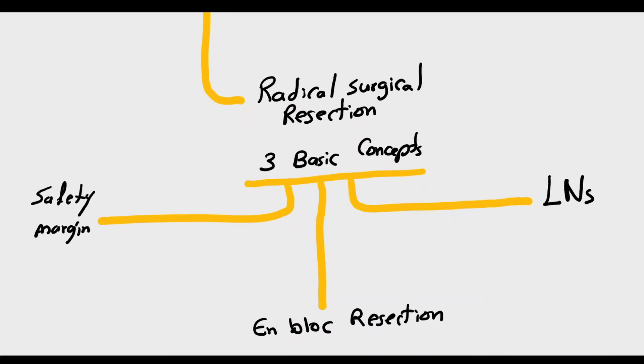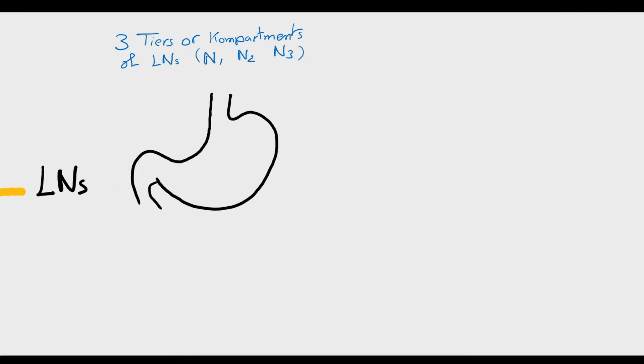We will start by talking about the lymph nodes. The stomach has very rich blood supply and in turn very rich lymphatic drainage. The lymph nodes around the stomach can be divided into three tiers or compartments: N1, N2, and N3.